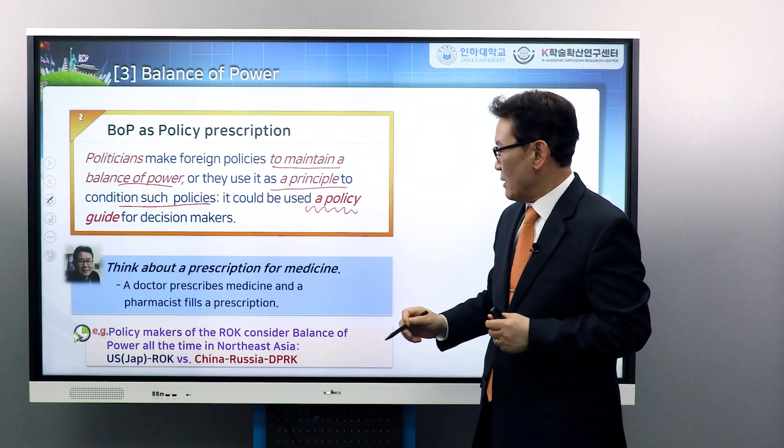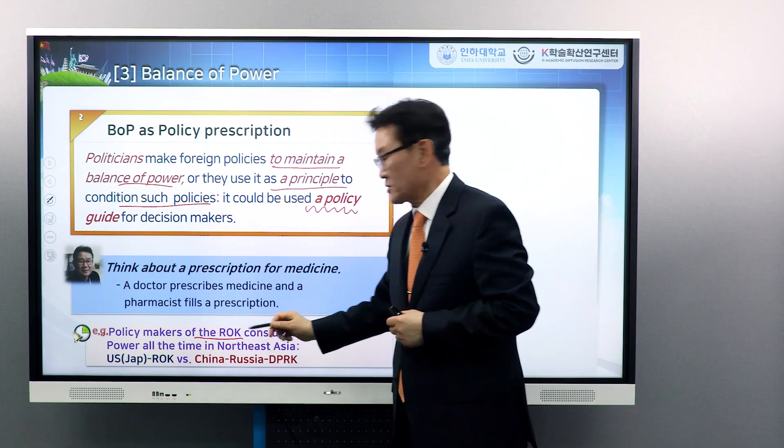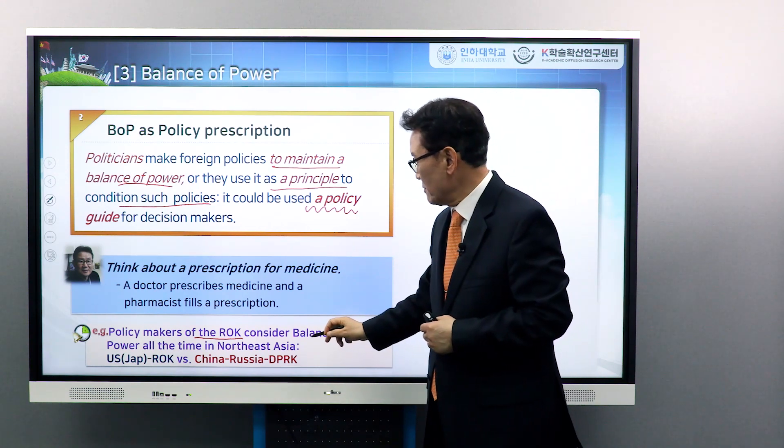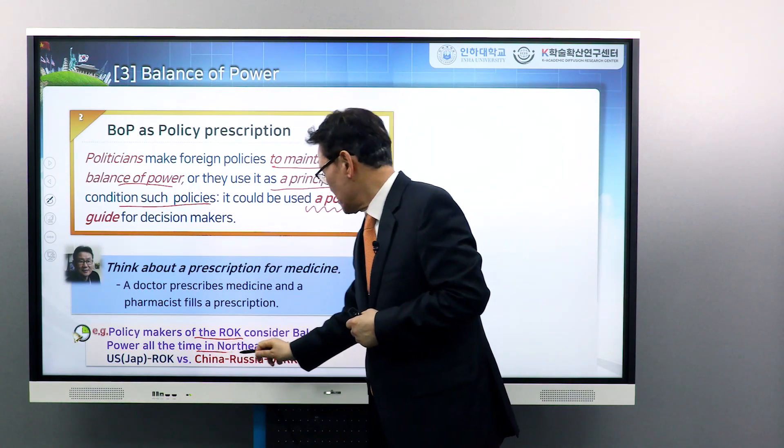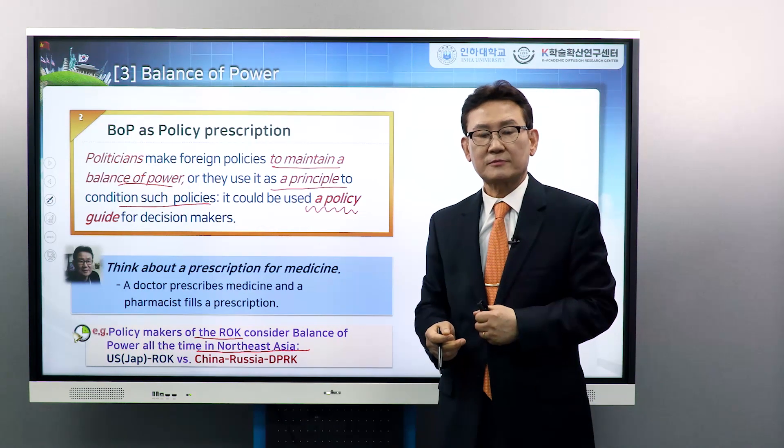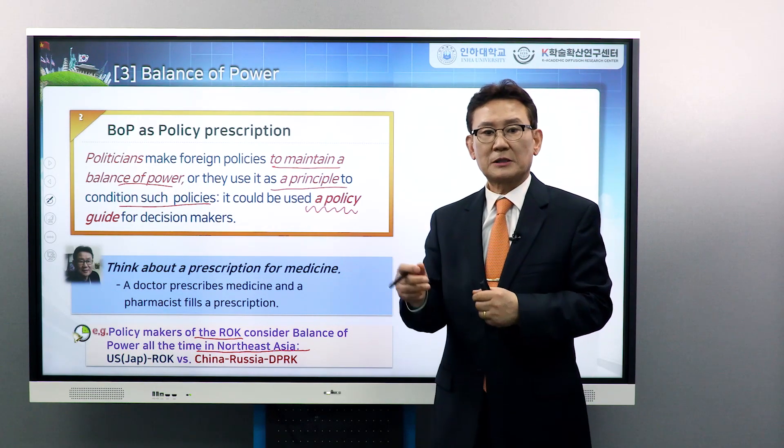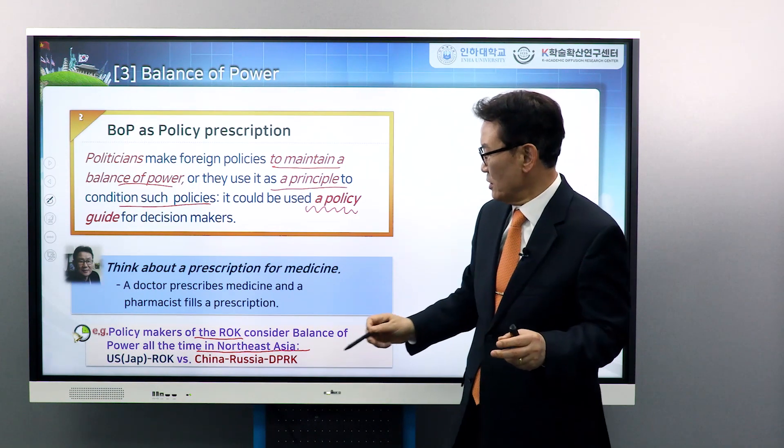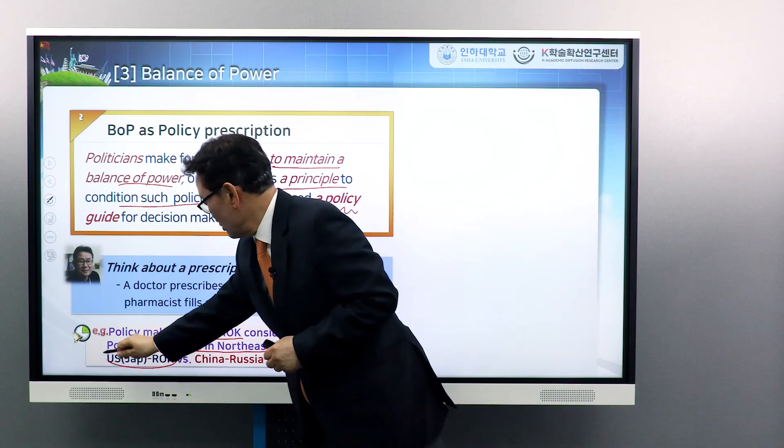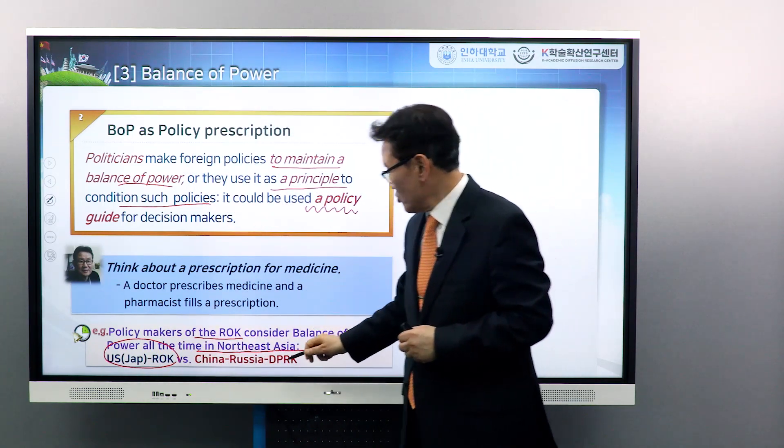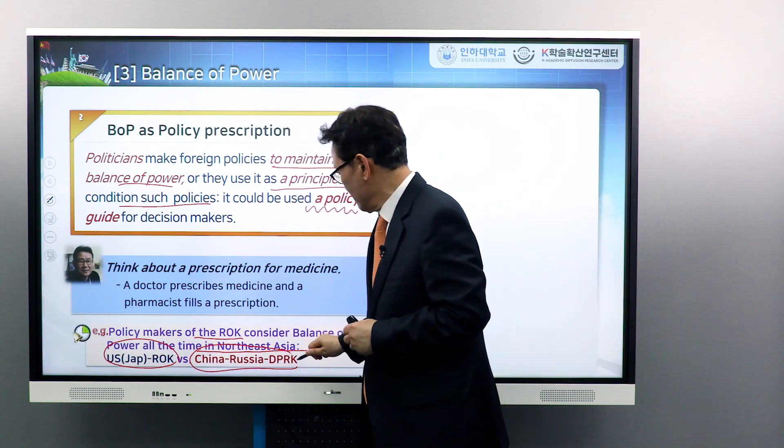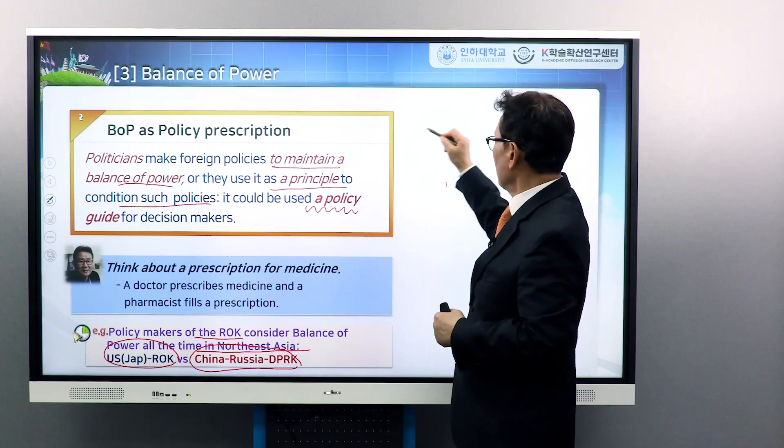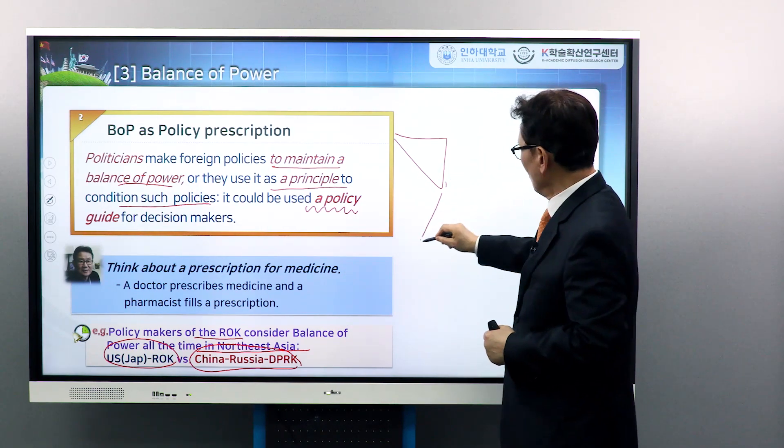For example, policy makers of ROK, South Korea, continuously consider the balance of power in Northeast Asia. If we look at the power balance between two parties, one is the US-Korea or US-Japan alliance versus China-Russia-DPRK, North Korean alliance. So there are two kinds of power balance.